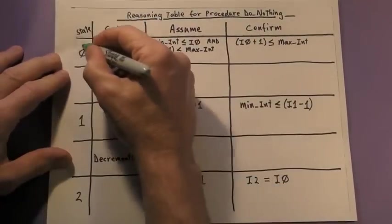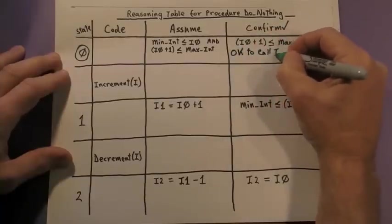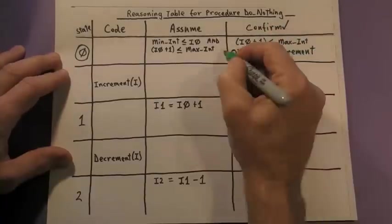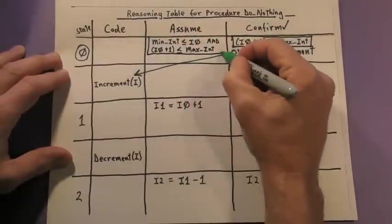Okay, let's move back to the reasoning table. In state 0, we have to confirm that it is okay to call the increment operation. We do this by proving the conclusion that appears in the confirm column by using the premises that appear in the assume column.